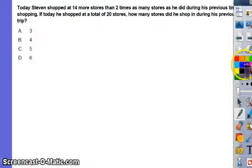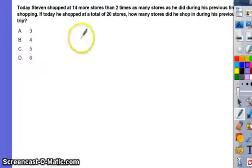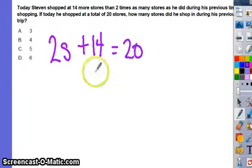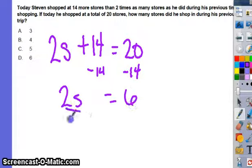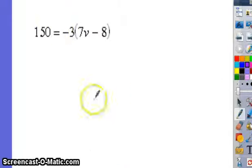Today, Steven shopped at 14 more stores than 2 times as many stores as he did during his previous time shopping. If today he shopped at a total of 20 stores, how many stores did he shop at during his previous trip? So 14 more is plus 14. Then 2 times as many, so we'll say 2 times as many as s stores. And it's supposed to be equal to 20. Subtract 14, subtract 14. 2s is equal to 6. Divide by 2, s is equal to 3.